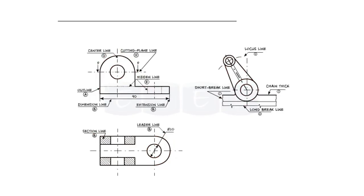Next is the continuous thin line. This line is basically used for dimension, extension, projection, leaders, hatching, etc.